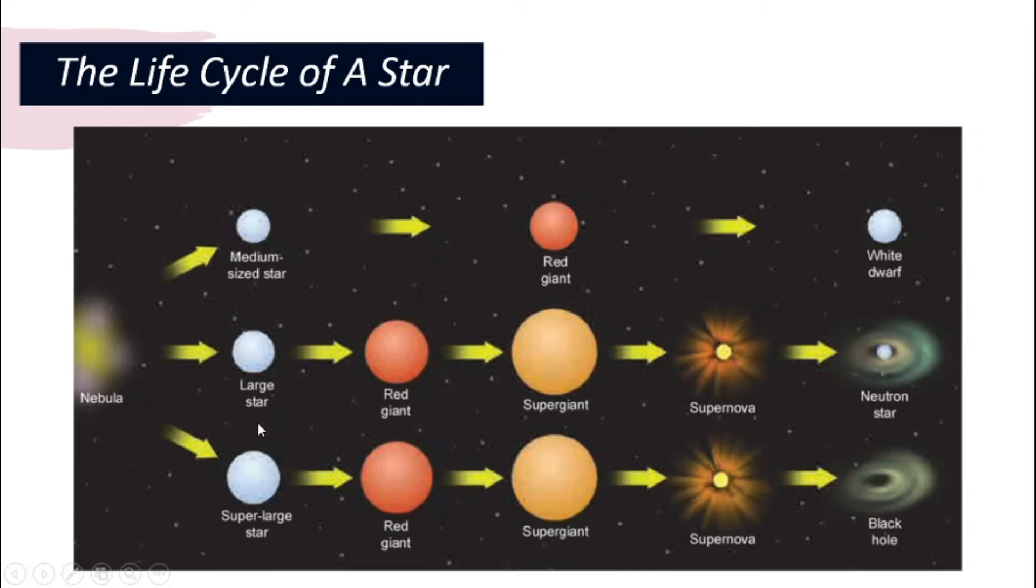And depending on the original size, if it is a large star, then after the supernova, a neutron star is formed. If it is a super large star, then after the supernova, what is formed next is a black hole. That is a full life cycle of a star.